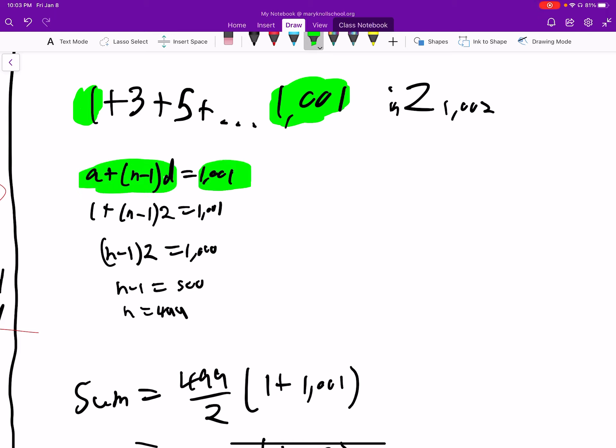And we also know that this is AN, so we set them equal to each other. And then we know A is the first element in the sequence, which is 1. And then D is the common difference, which is equal to 2 every time, right? So then we just solve for N and we get 499.